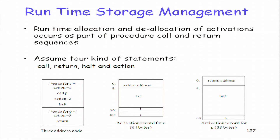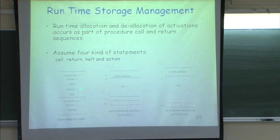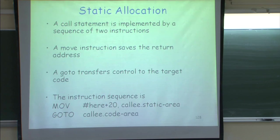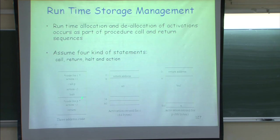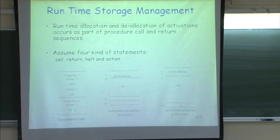When I say 'call P', I need to go to the activation record of P and fill in the return address. The return address is the instruction next to the call. So I use a move instruction to save the return address, and then a goto transfers control to the target code. When I say 'return', I jump back to this address and resume execution from that point.